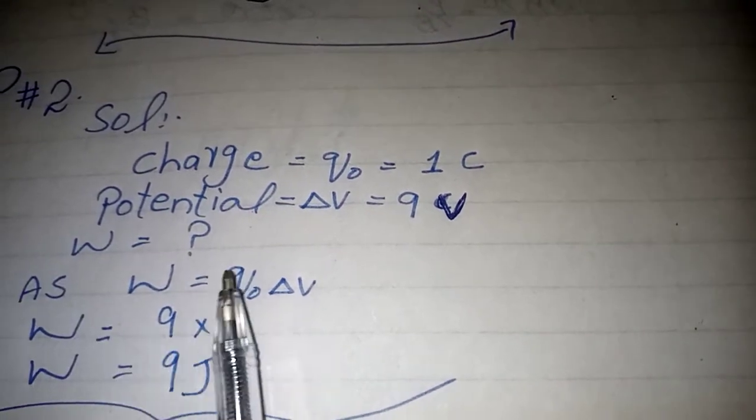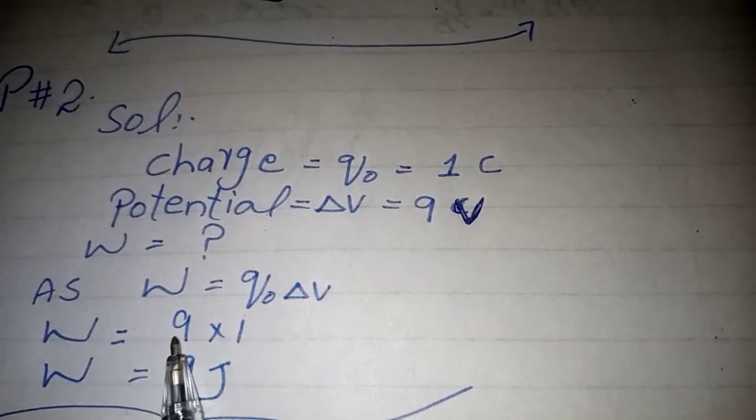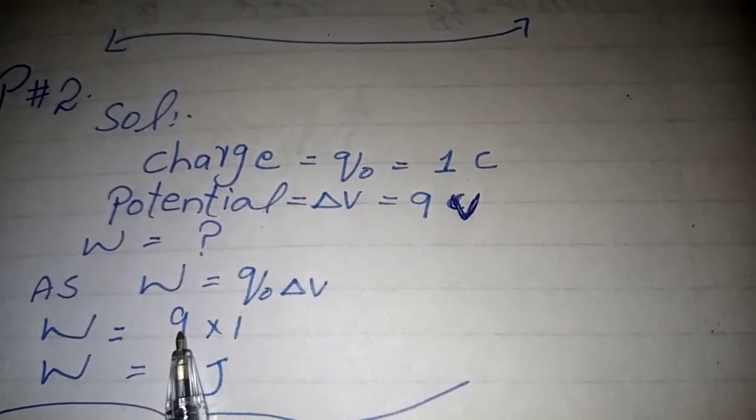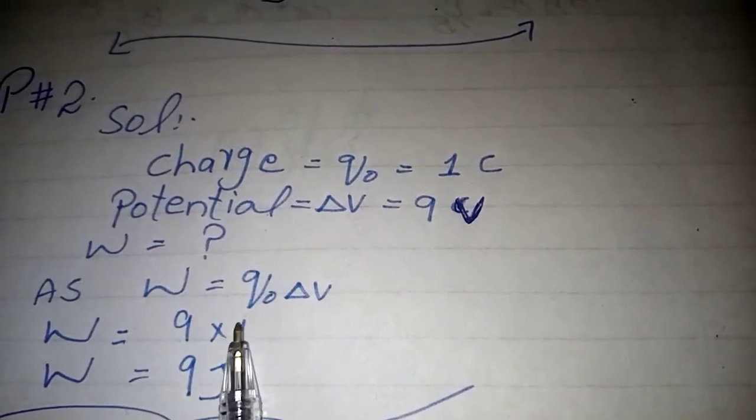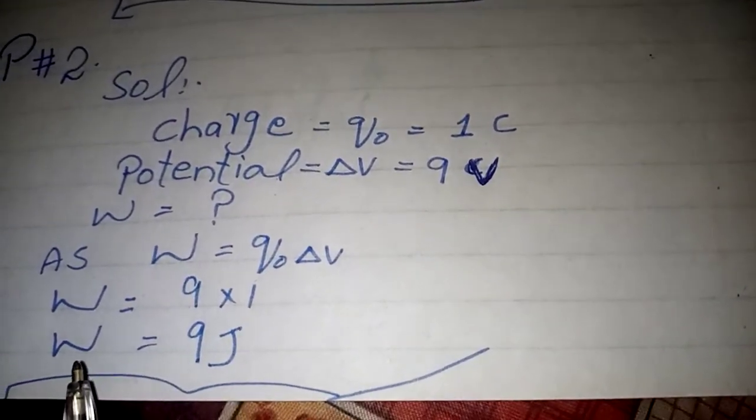Applying the formula, we have W equals Q times ΔV. Work done equals charge times potential difference, so 1 times 9, and work done equals 9 joules.